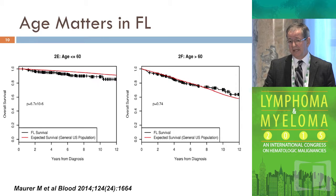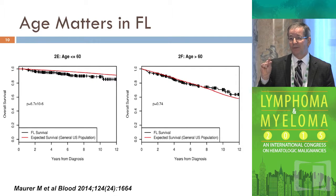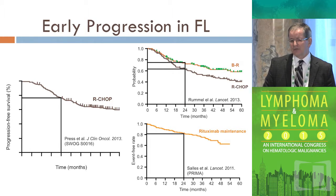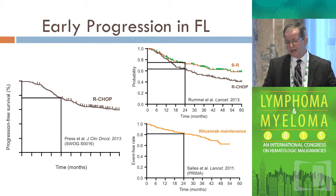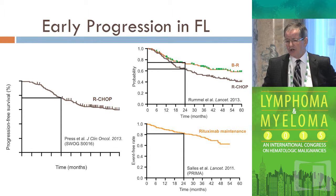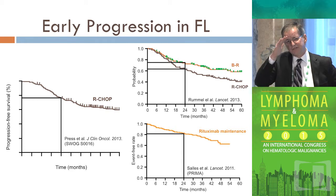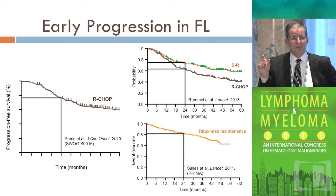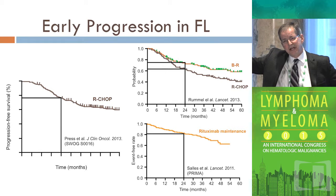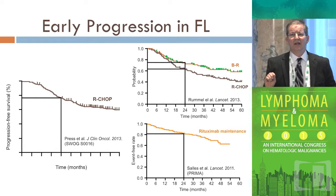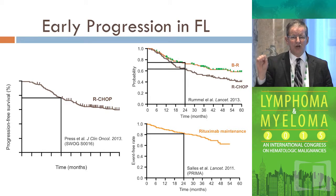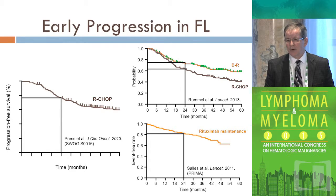If you look at the black curve for patients under the age of 60, follicular lymphoma survival is slightly lower than a patient without cancer. Three major studies — the OLLI-PRESS study, the Rommel study of BR versus R-CHOP, and the one from Dr. Salas — all show that in the first two years there's a steep drop-off. This is the 20% of patients who fall off the curve in the first two years, and then the curves level off and drift down gradually over the years.